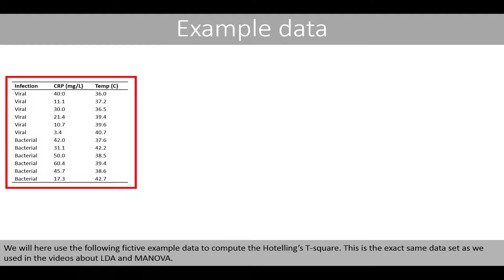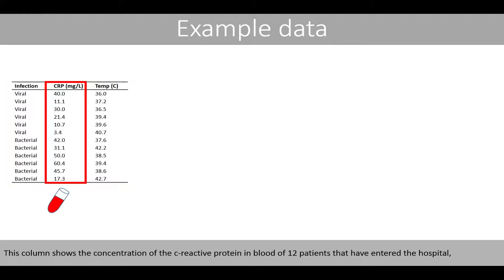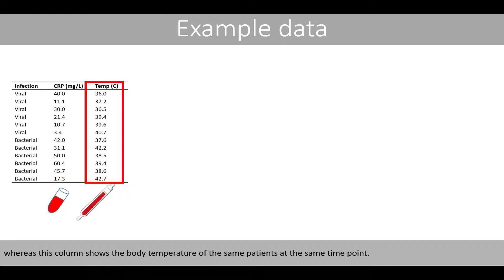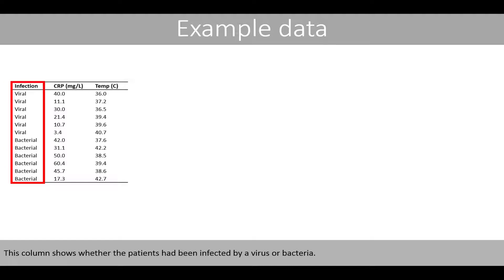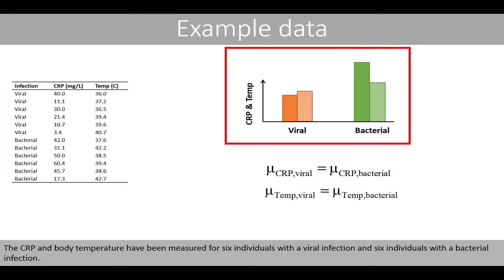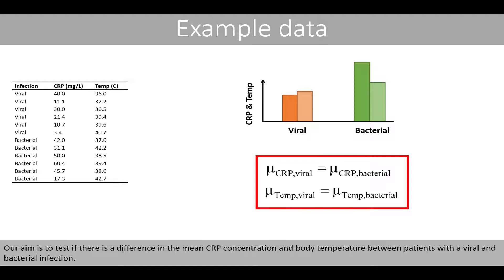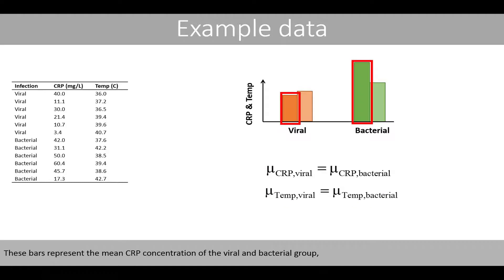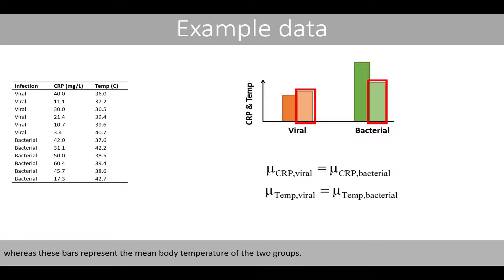We will use the following fictive example data to compute the Hotelling's t-square — the exact same dataset used in the videos about LDA and MANOVA. This column shows the concentration of the C-reactive protein in blood of 12 patients that have entered the hospital, whereas this column shows the body temperature of the same patients at the same time point. This column shows whether the patients had been affected by a virus or bacteria. The CRP and body temperature were measured for six individuals with a viral infection and six with a bacterial infection. These bars represent the mean CRP concentration and body temperature of the two groups.